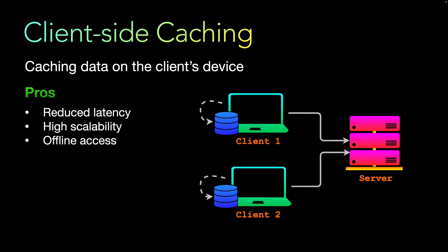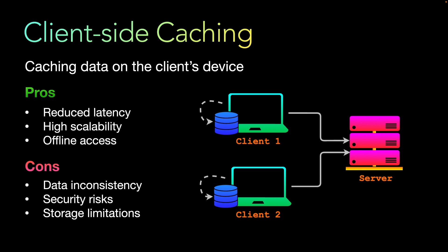Another pro is offline access — clients can access the cached data even without an active internet connection. The request need not reach the server; the app can still operate from the client's cached data.